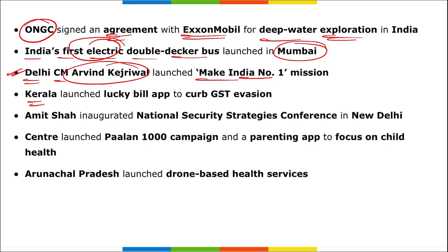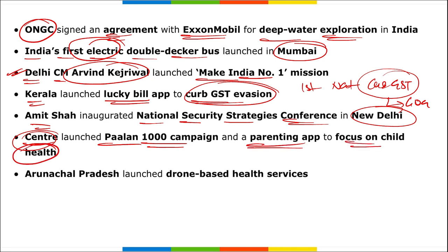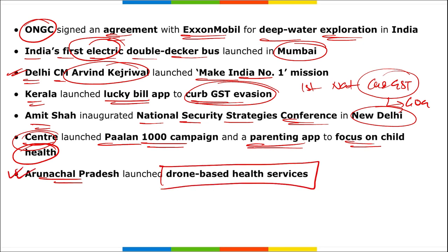Delhi's Chief Minister Arvind Kejriwal launched the Make India Number One Mission. Kerala launched the Lucky Bill app to curb GST evasion. The first National Museum for Customs and GST is located in Goa. Amit Shah inaugurated the National Security Strategies Conference in New Delhi. The Centre launched the Palan 1000 campaign and a parenting application focused on child health.